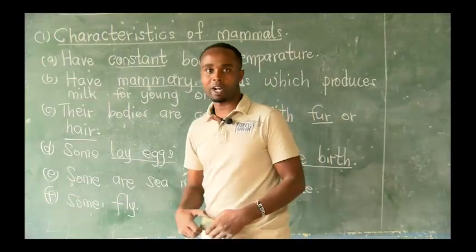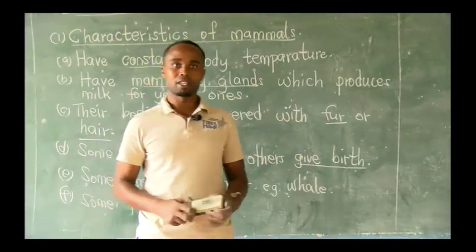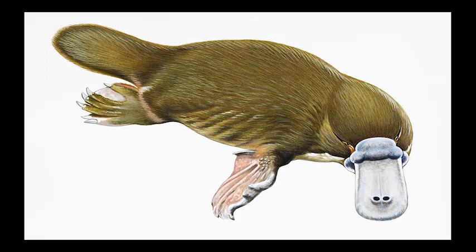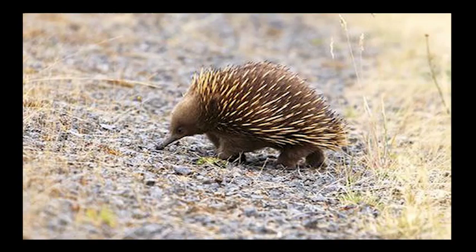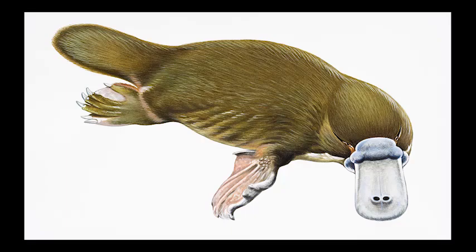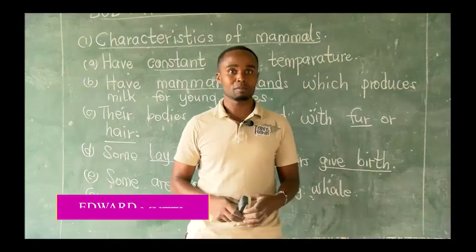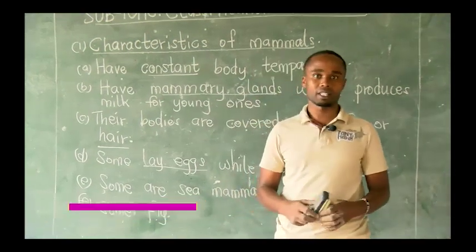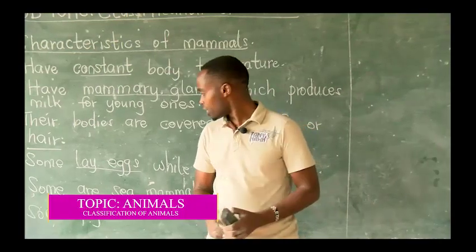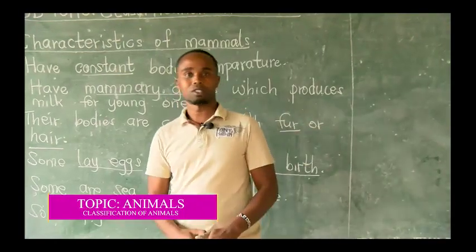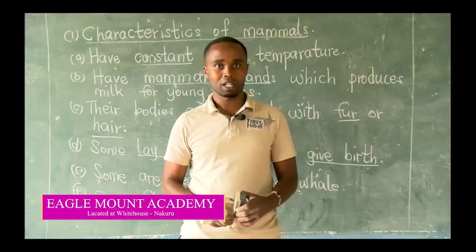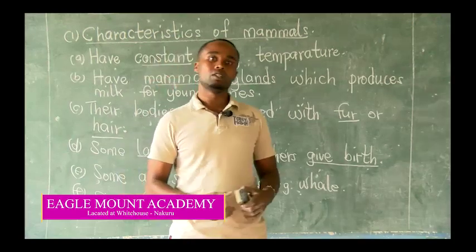Some mammals lay eggs and others give birth. There are some mammals like the spiny anteater and the duck-billed platypus that lay eggs. They are mammals — they have mammary glands — but they lay eggs. Others like cows, dogs, and donkeys give birth. Another characteristic is that some mammals live in water — we call them sea mammals.